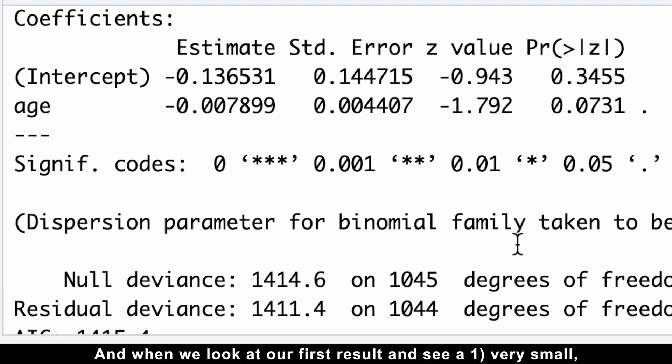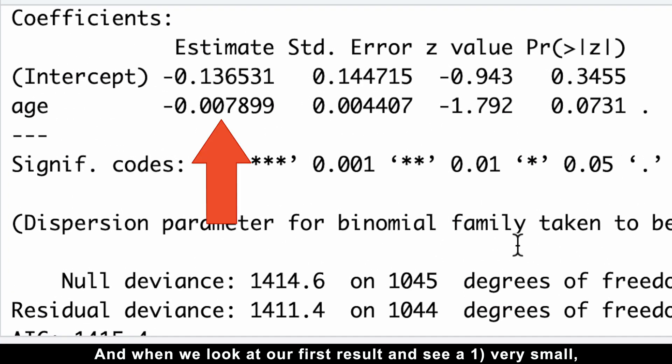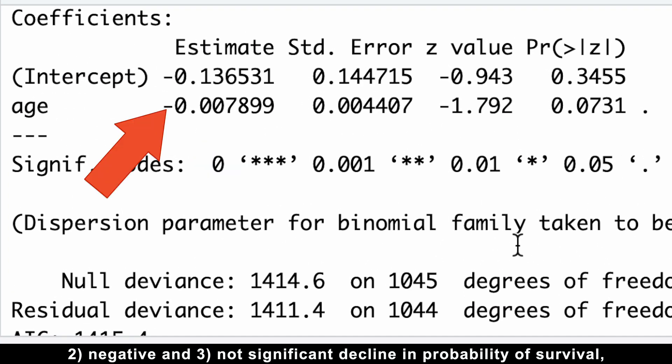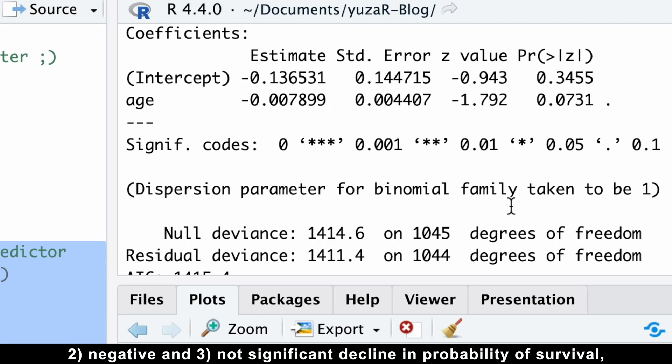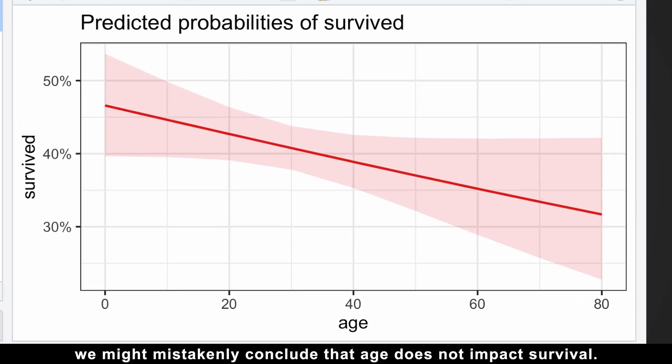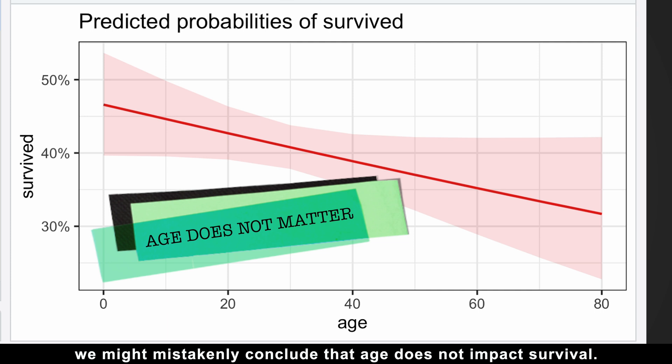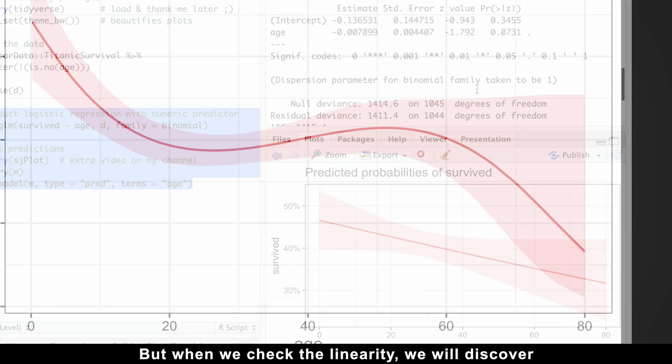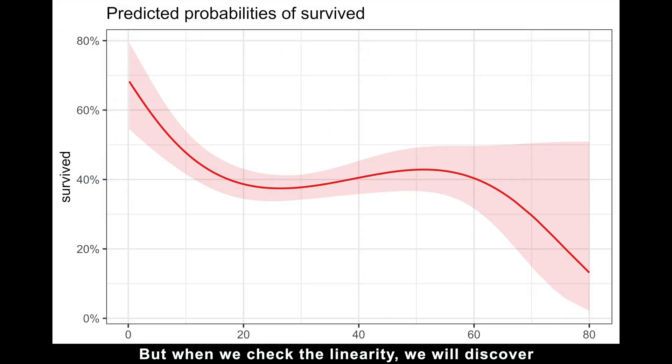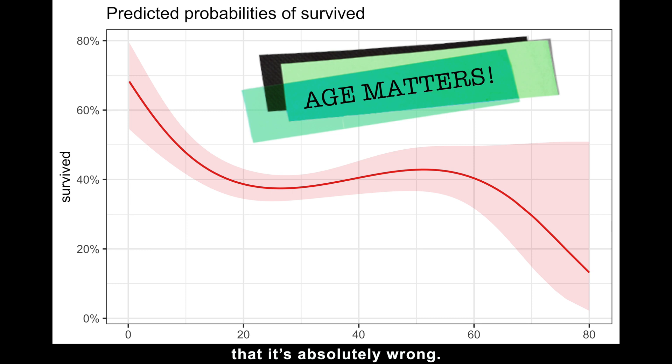And when we look at our first results and see very small, negative, and not significant decline in probability of survival, we might mistakenly conclude that age does not impact survival. But when we check for linearity, we will discover that it's absolutely wrong.